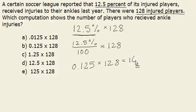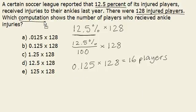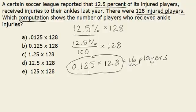And we find that equals 16 players. So 16 of the 128 injured players had ankle injuries. However, this problem is asking for the computation used to find this answer. So our solution is 125 thousandths multiplied by 128. You'll find that B matches this, so B is our answer.